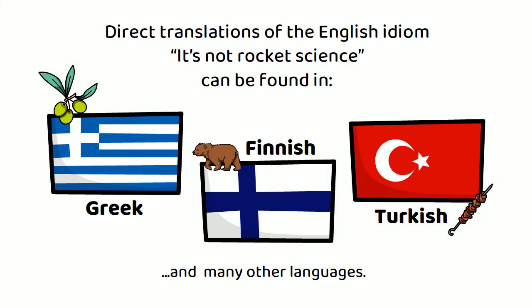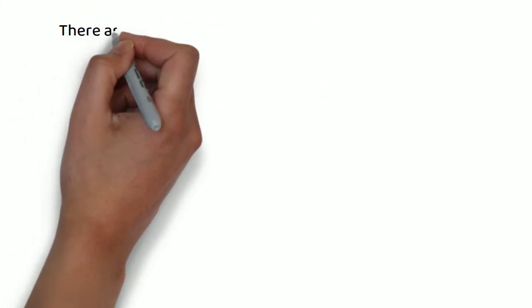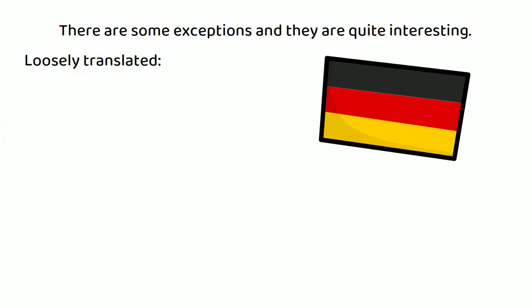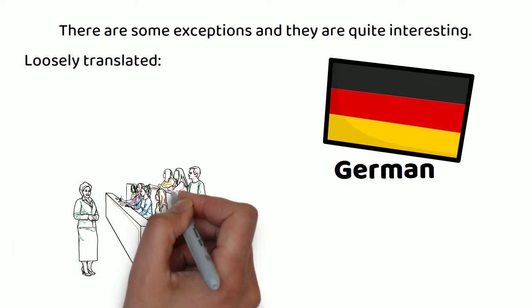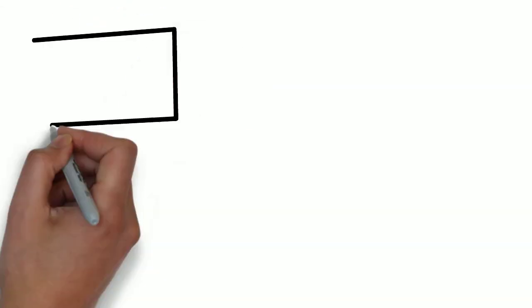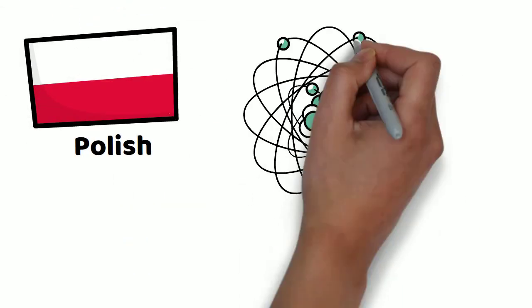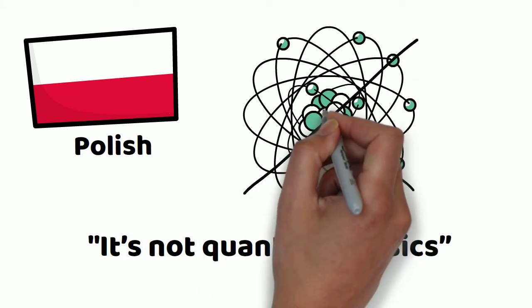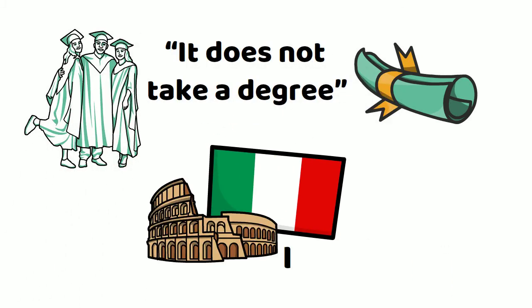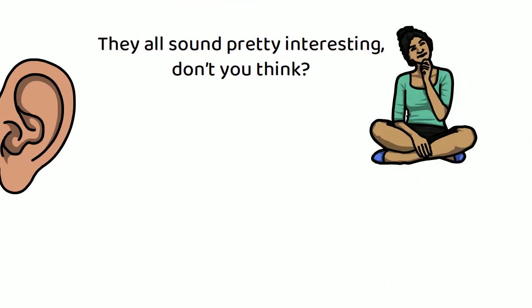However, there are some exceptions and they are quite interesting. Loosely translated, in German they would say 'it's not a thesis'. In Polish we could say 'it's not quantum physics', and 'it does not take a degree' is an idiom used in Italy. They all sound pretty interesting, don't you think?